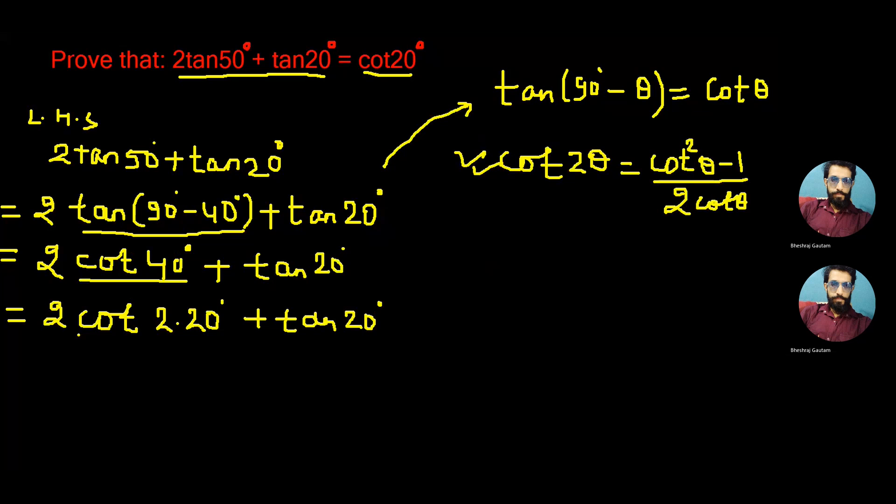We can write 2 times cot(2 × 20°) as cot²20° minus 1 whole divided by 2 times cot20° plus this tan20° can also be